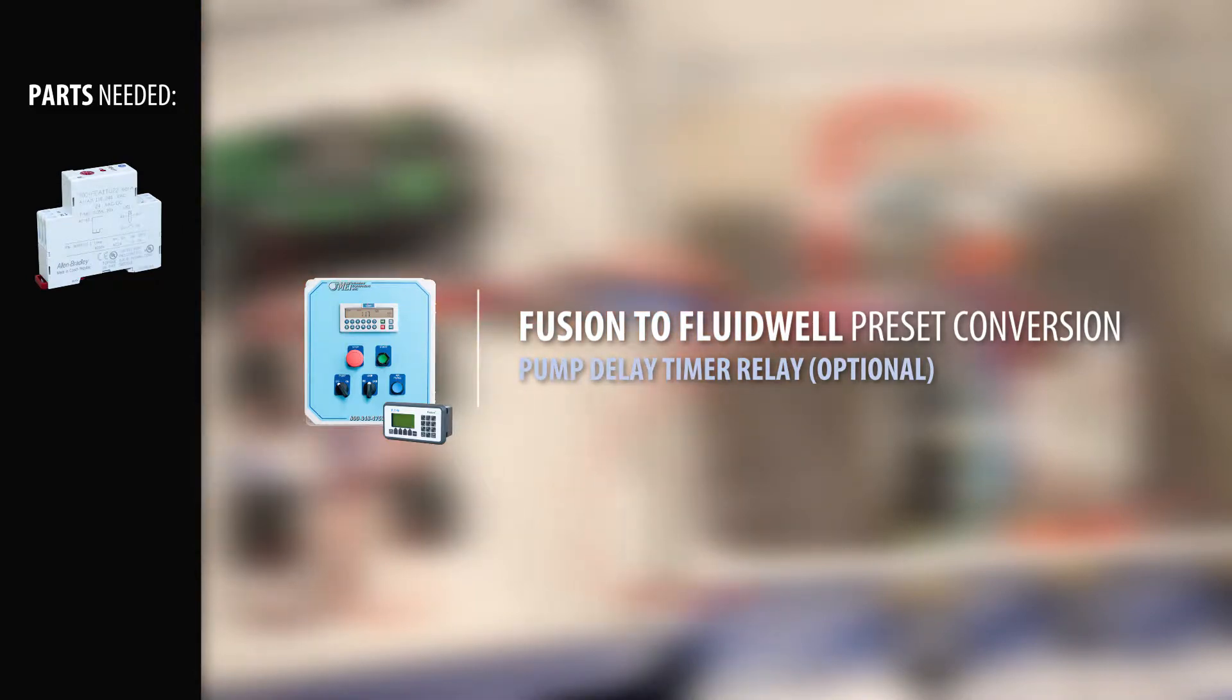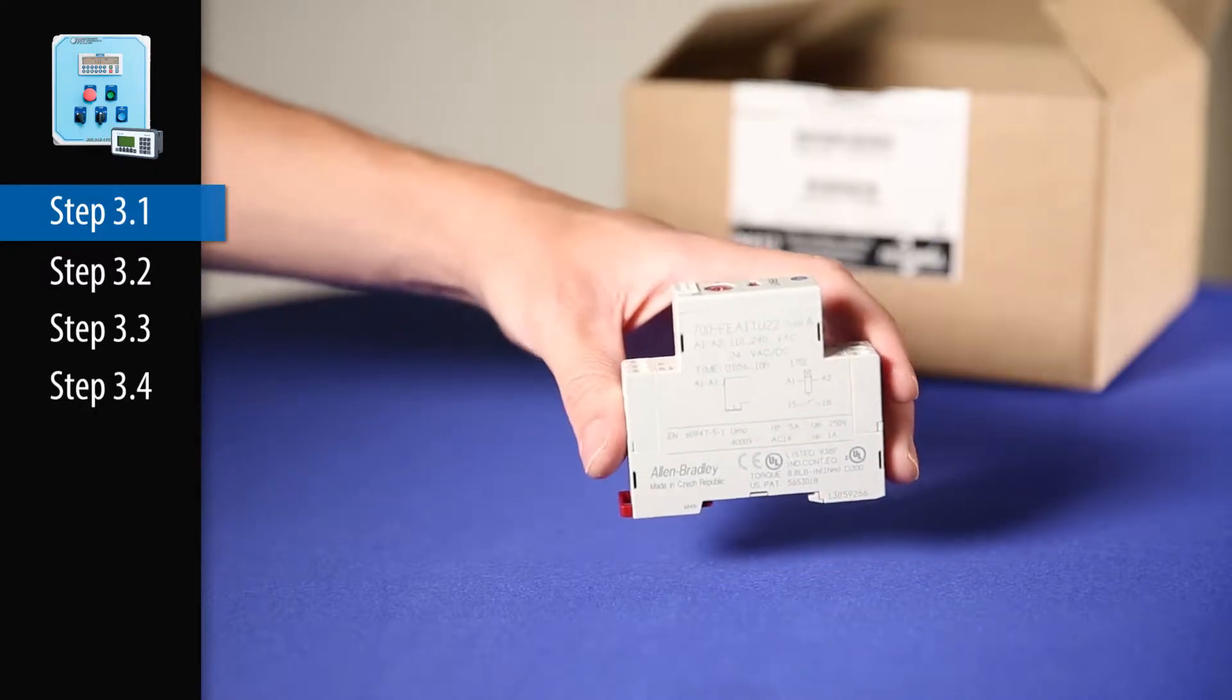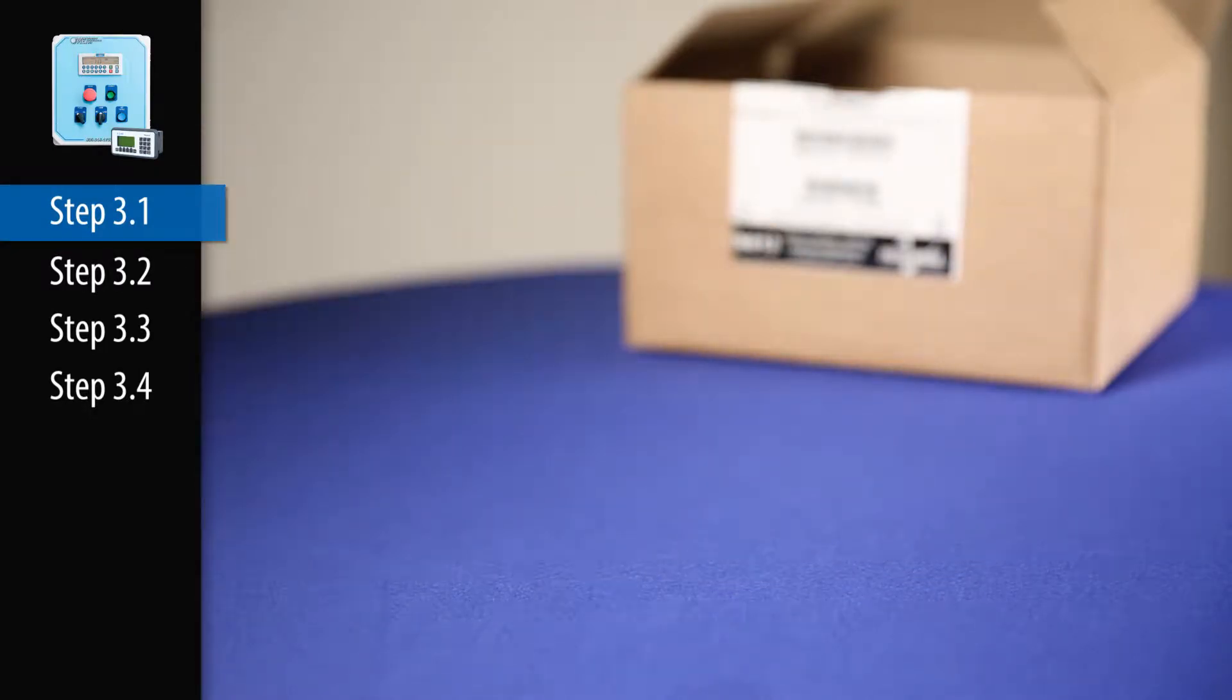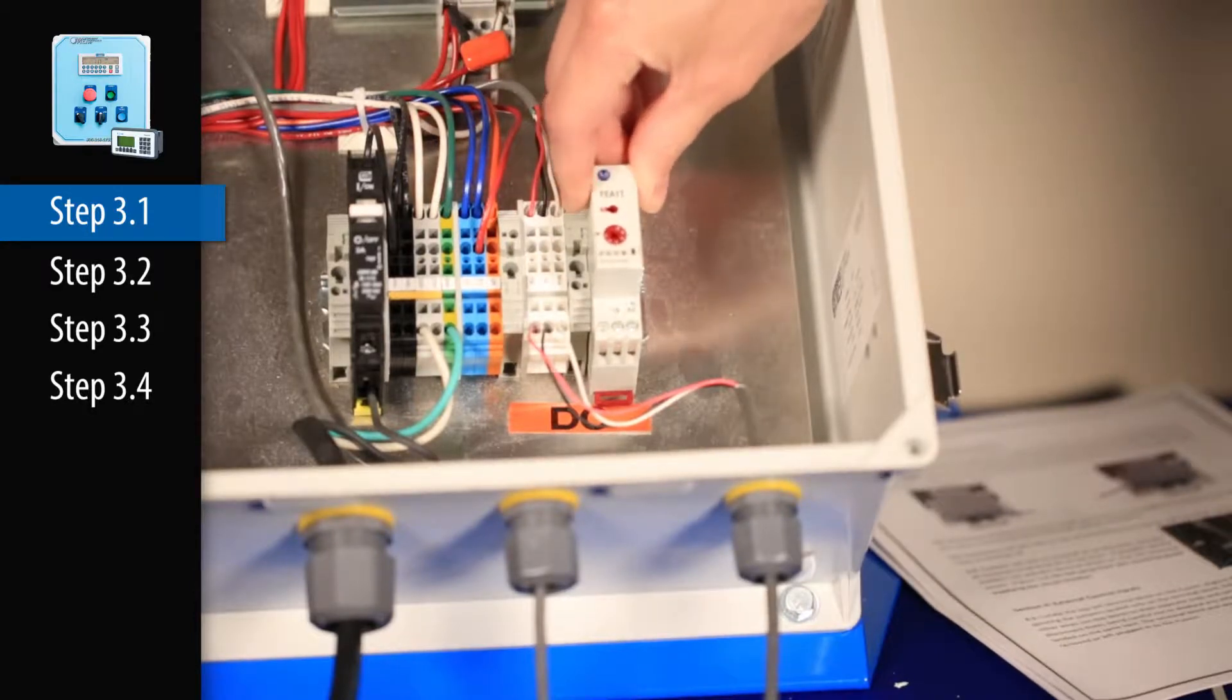Now let's look at the pump delay timer relay. Step 3.1. Open the timer relay that was sent with the fluid well. Place the timer on a section of opened DIN rail. Attach it by sliding the top side of the timer onto the DIN rail.